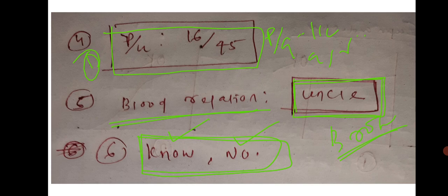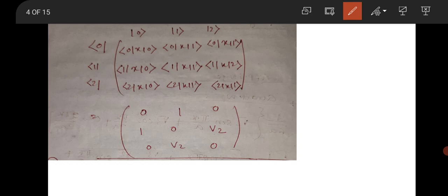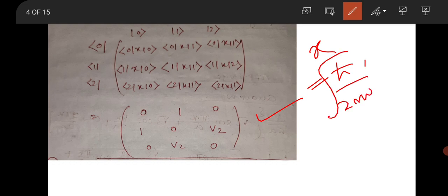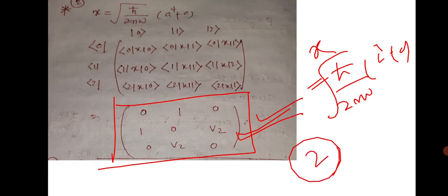Those are some questions from the aptitude section. Now let's discuss the physics section. This question was from quantum mechanics and the harmonic oscillator — the question asked for the matrix form of the operator x, represented as √(ℏ/2mω) (a† + a). The correct answer matrix is: [0, 1, 0; 1, 0, √2; 0, √2, 0]. This question was for two marks in the MCQ section.